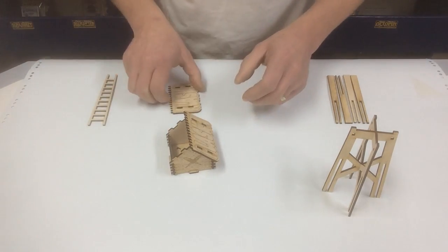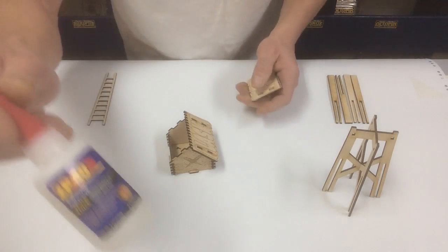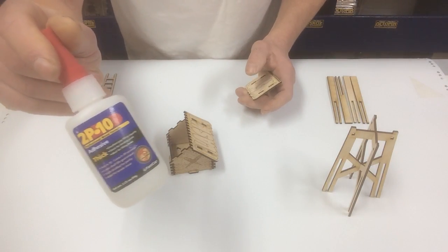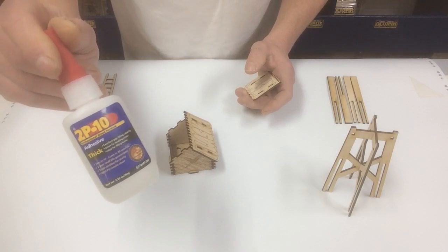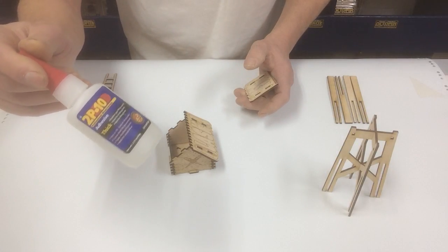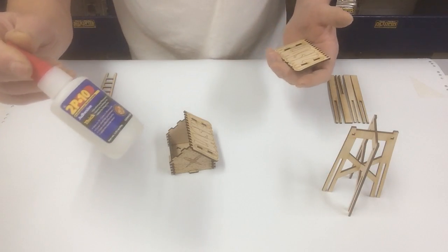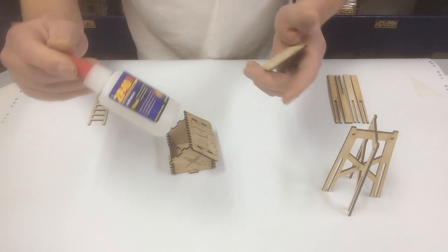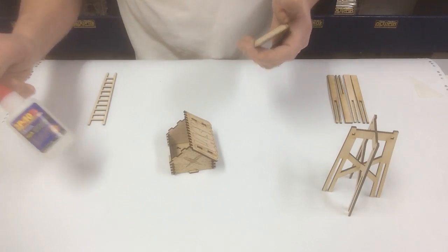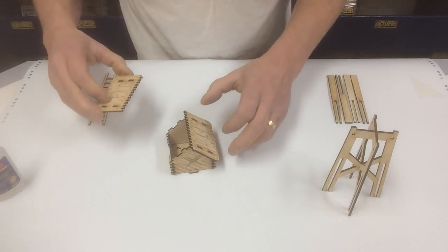You just slide those in. I also have some super glue here, it's called 2P10. I like the thick stuff. There's a medium and there's a thin. I'd recommend staying away from the thin. Any kind of wood glue or super glue, just a little tiny dot, real small amount.